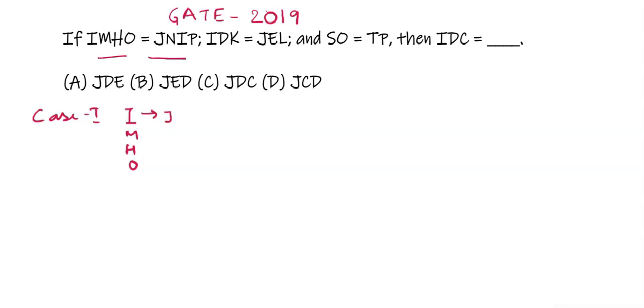is J, the next alphabet of M is N, the next alphabet of H is I, and the next alphabet of O is P. For case 2, let's see whether the same thing is applicable or not: IDK.